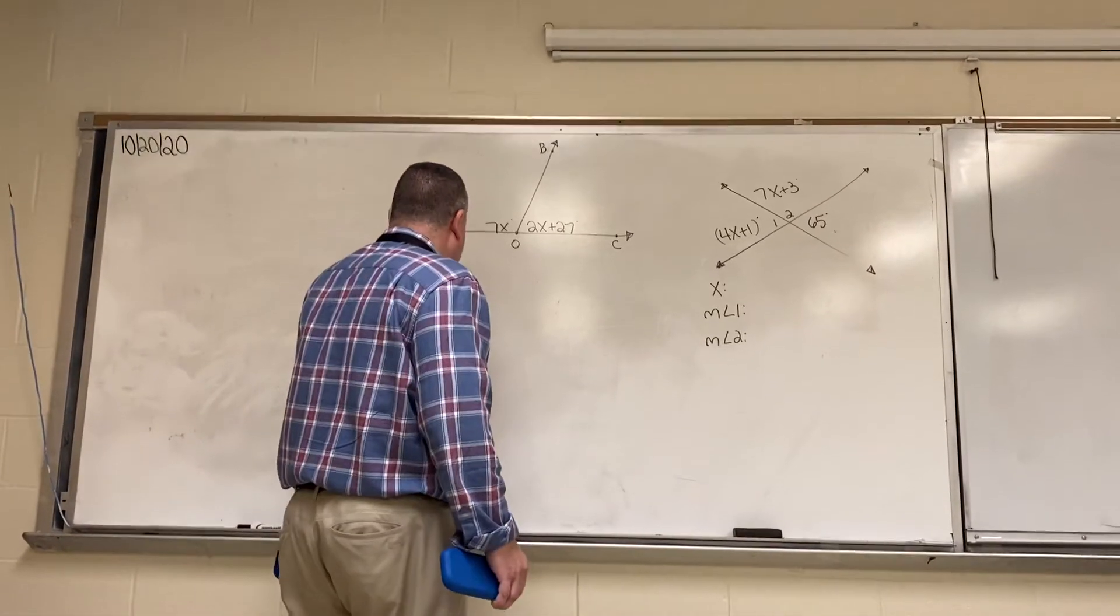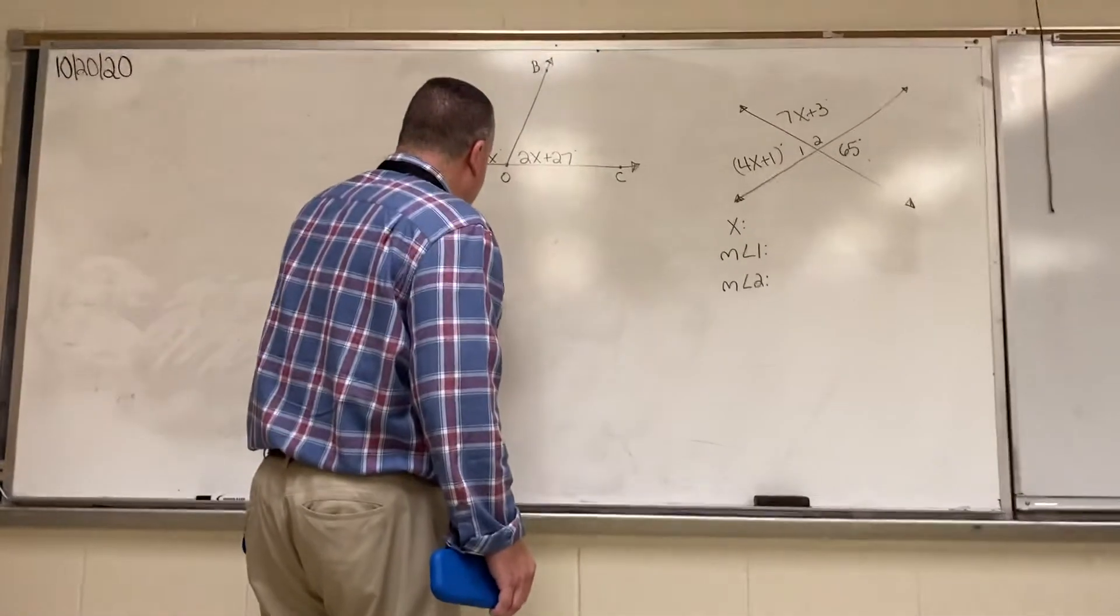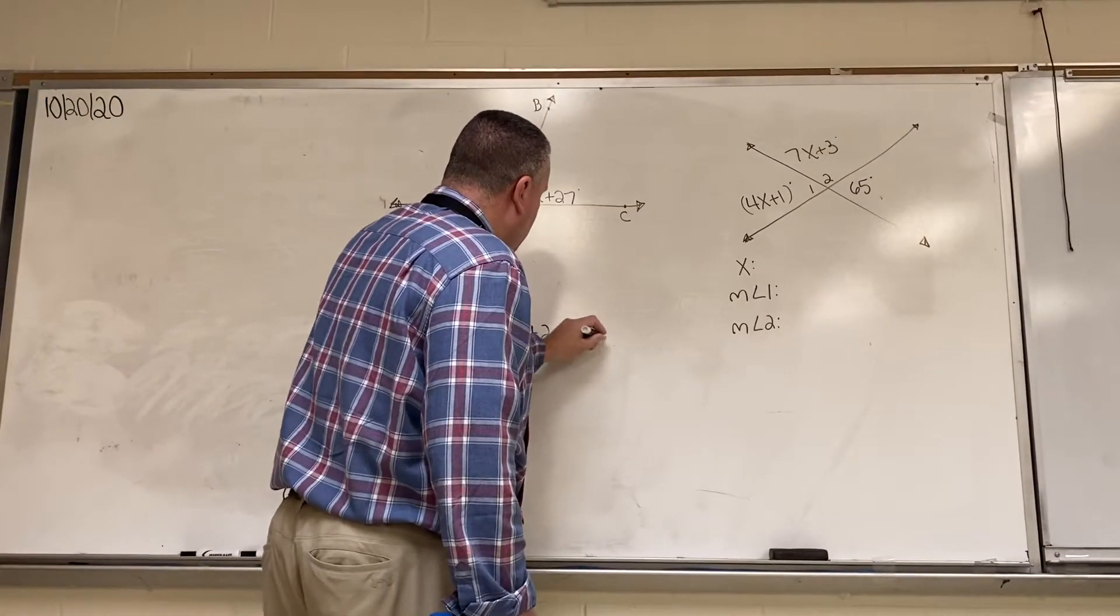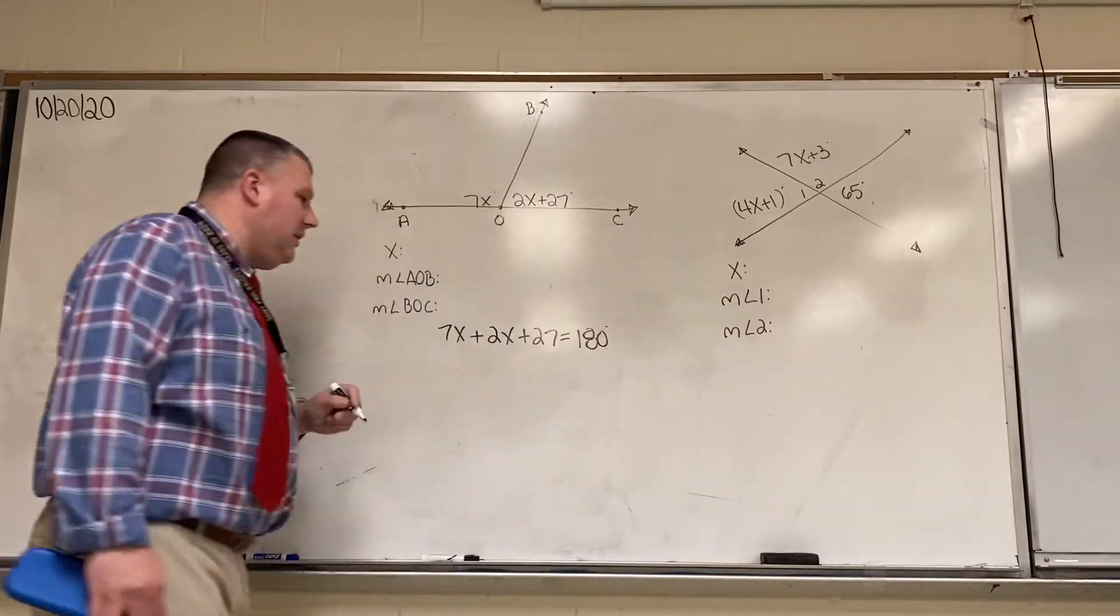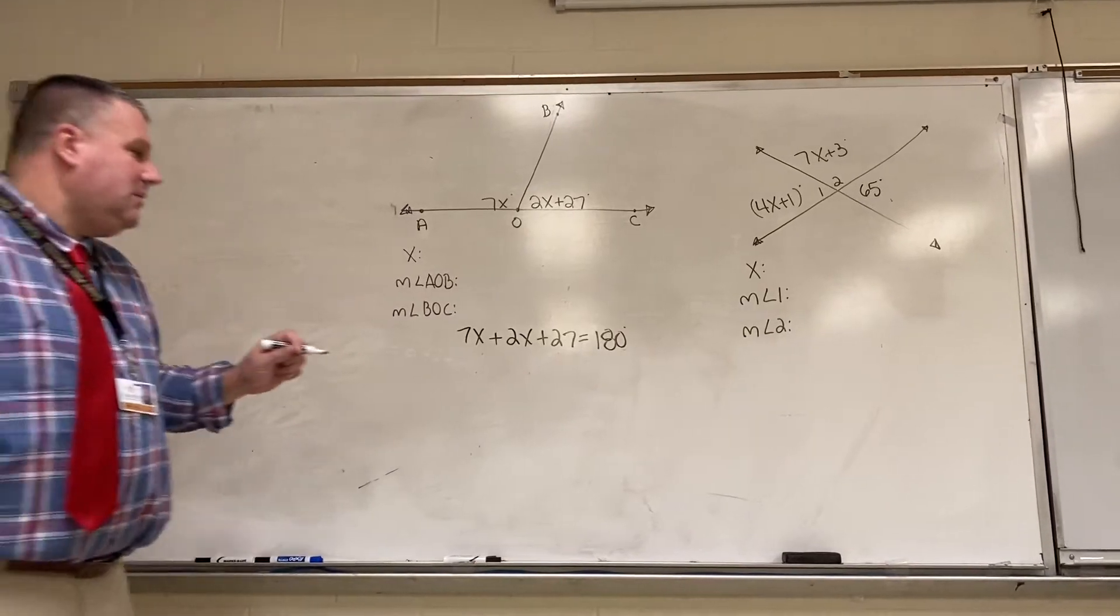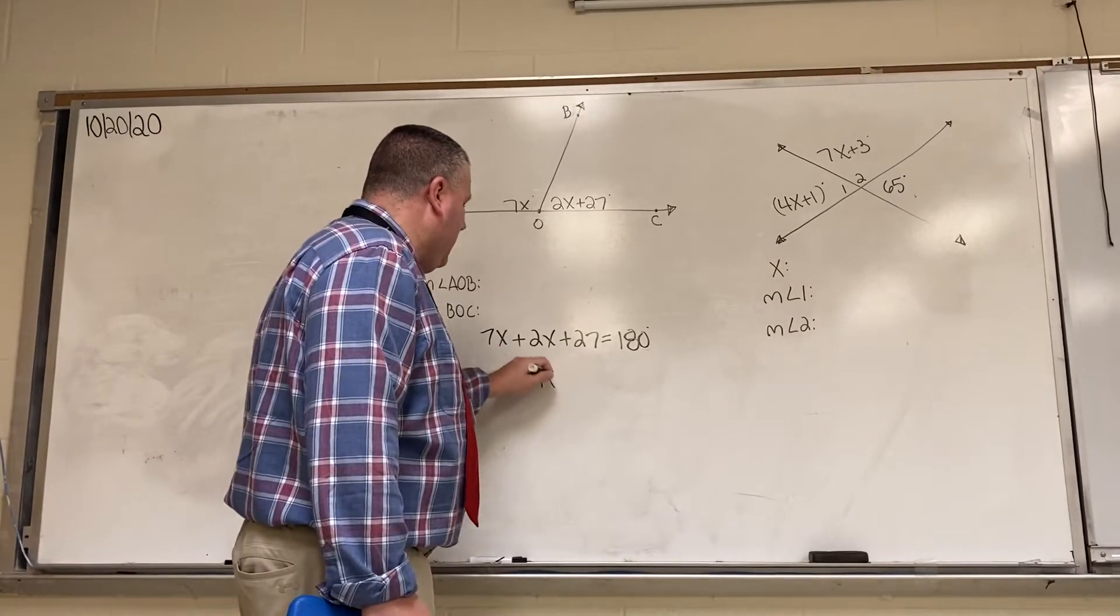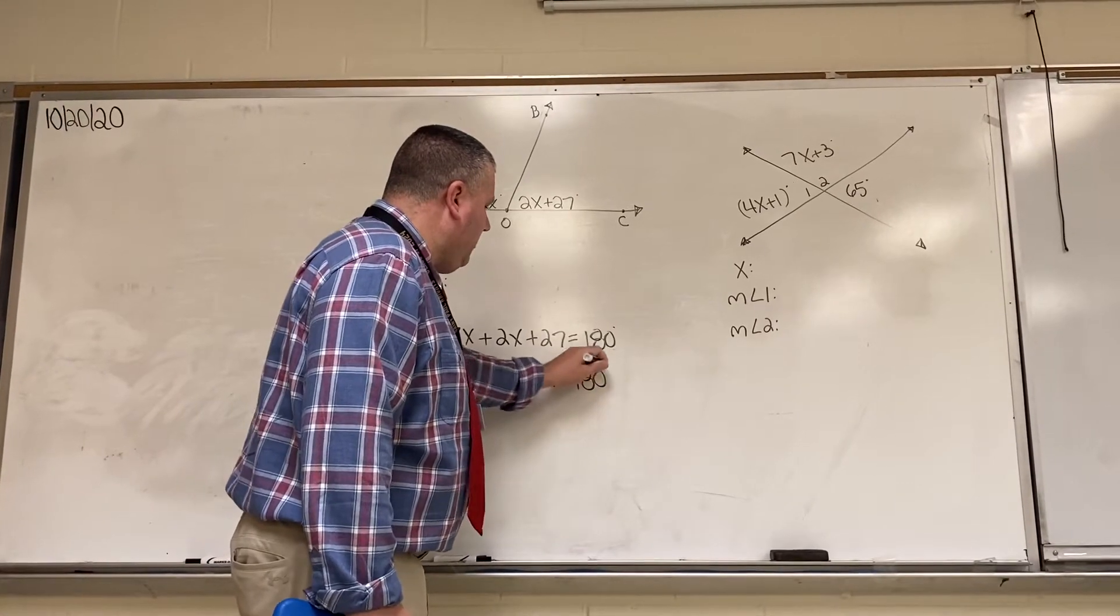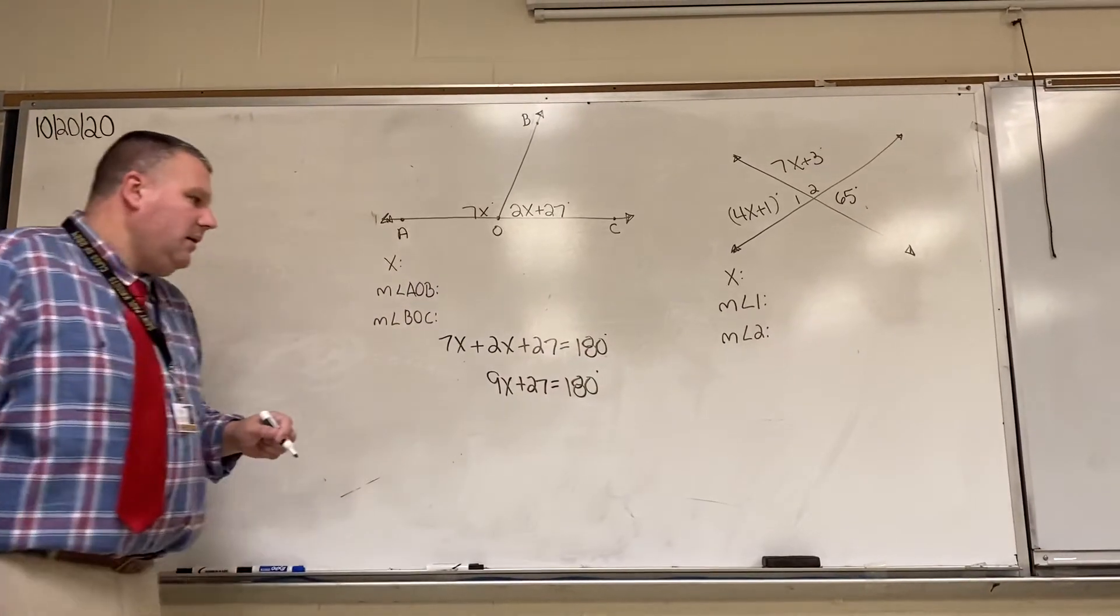We're going to set 7x plus 2x plus 27 equal to 180 degrees. We're going to have to combine like terms. So, that's 9x plus 27 is equal to 180 degrees.